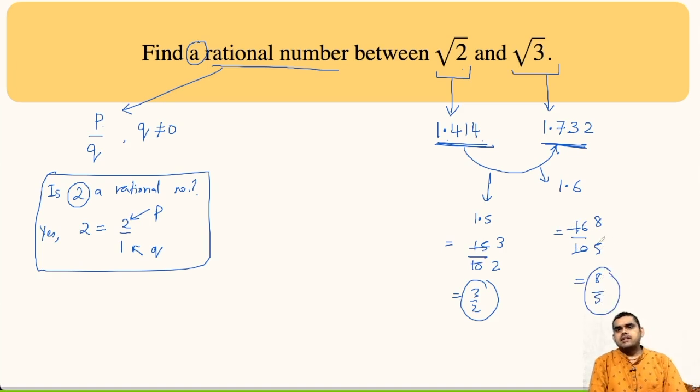So, both the answers are correct. You can write 1.7 also, but it should be greater than 1.414 and less than 1.732. So, if we write 1.7, this will be 17 upon 10. So, this is also a correct answer.